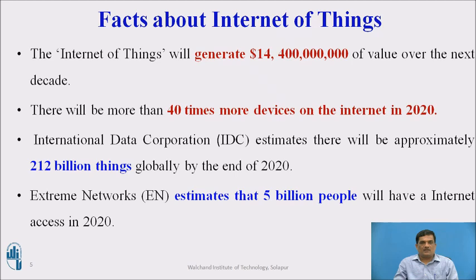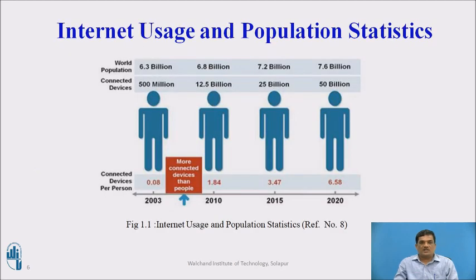The Internet of Things has some interesting facts. IoT will generate around 14.4 lakh crore dollars of value over the next decade. There will be more than 40 times more devices on the Internet by 2020. International Data Corporation estimates approximately 220 billion things globally by the end of 2020. Extreme Networks estimates that 5 billion people will have Internet access in 2020.